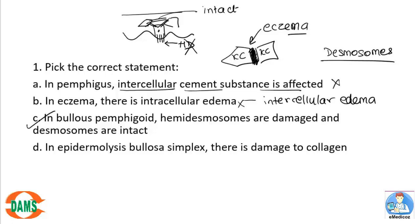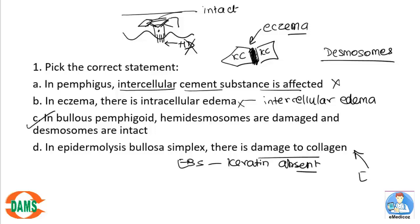In bullous pemphigoid, hemidesmosomes are gone and desmosomes are intact. In pemphigus it's the other way: the desmosome is gone and the hemidesmosome is okay. The fourth option — in EBS there's damage to collagen — is wrong. In EBS the damage is to keratin. Collagen is the problem in EBD (epidermolysis bullosa dystrophica). So the correct answer is the third option: bullous pemphigoid.